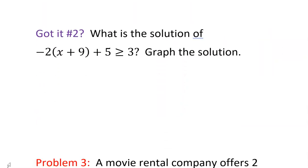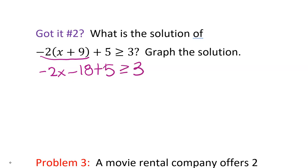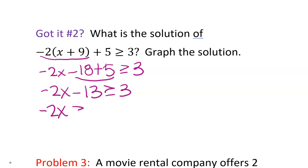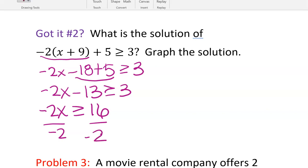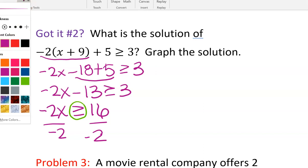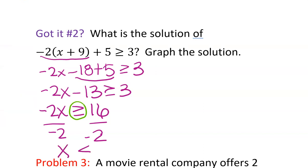Pause the video and practice 'got it' question number two, then check your answer. The question is: what is the solution of negative two times the quantity (x plus nine) plus five, greater than or equal to three, and graph it? Applying the distributive property: negative two times x and negative two times nine. Combining like terms on the left gives negative two x minus 13, greater than or equal to three. Adding 13 to both sides, then dividing by negative two — dividing by a negative number flips the inequality symbol. So the solution is x is less than or equal to negative eight.